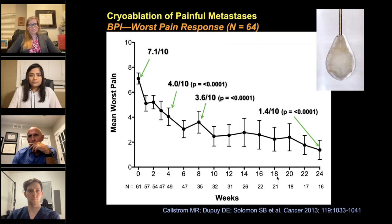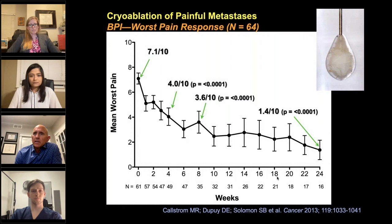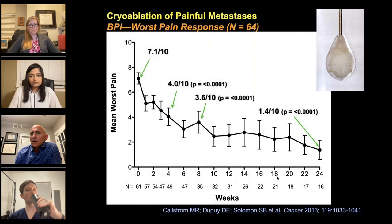We ran multiple multi-center trials, and this is what they typically look like depending on the modalities used. The BPI — Brief Pain Inventory — is a measure of patient-reported outcomes. In general, patients started at 7 out of 10 pain and over time their pain dropped below 2. So it works very well for patients.